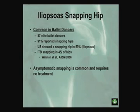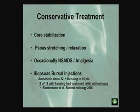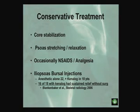Internal snapping is common in dancers and in patients with retroversion or pincer-type pathology. I've become more and more aggressive in surgically releasing the psoas, at least partially, in these patients. For conservative treatment, one really useful approach is injecting the psoas — traditionally we'd send patients to radiology, but I'm now doing it in the office using ultrasound.